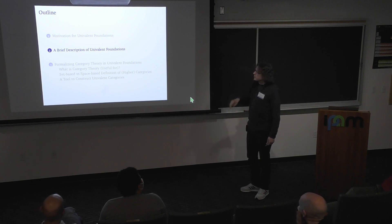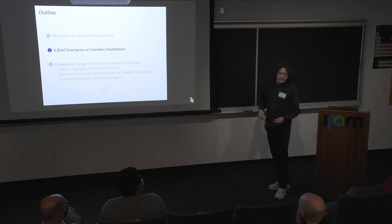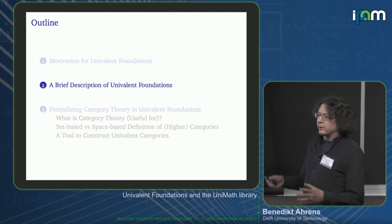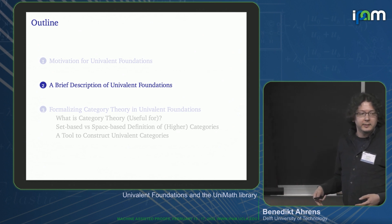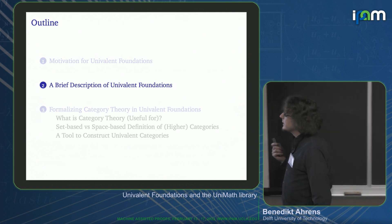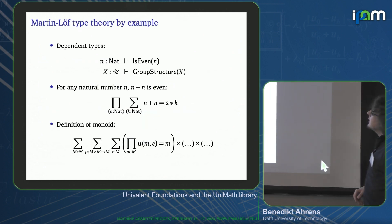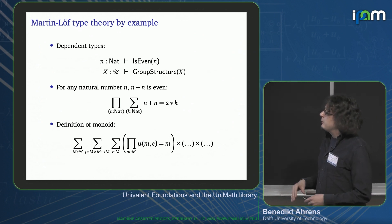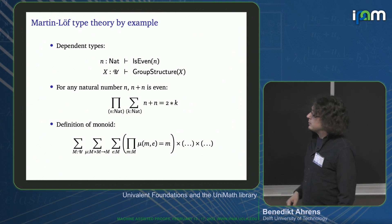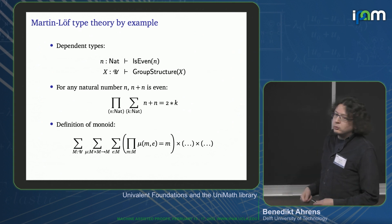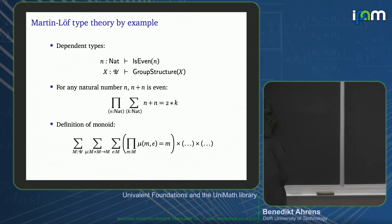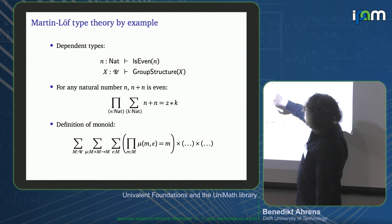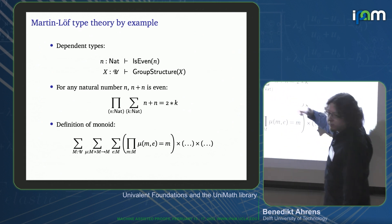I will give a brief description of the technicalities of univalent foundations — not very technical, just a little bit — also to clarify the difference between univalent foundations and the Lean type theory that will also be discussed during this week. The technical basis for univalent foundations, at least for the first version, is Martin-Löf type theory. In Martin-Löf type theory, one can write things like dependent types — for instance, if one has a natural number n, one can form the predicate 'is even,' and 'is even of n' would be a type.